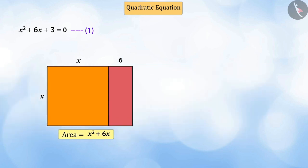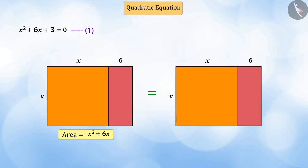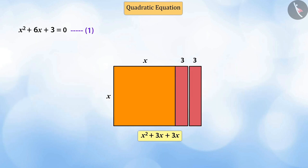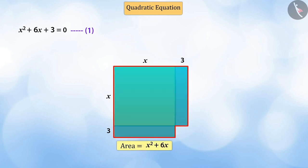Now, we can divide the small rectangle, which is part of the new rectangle, into two equal rectangles in this manner. Now, let us arrange the rectangular pieces in this way. On doing so, we get a new shape whose total area is still equal to x square plus 6x. We can say that this shape is neither a square nor a rectangle.